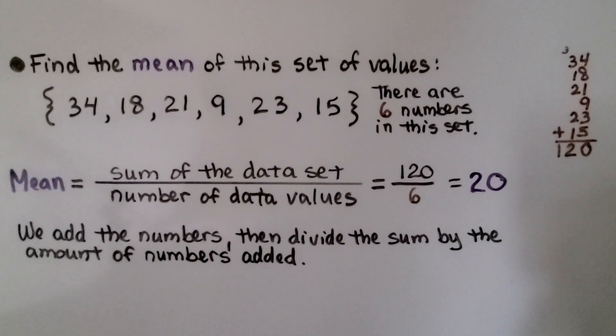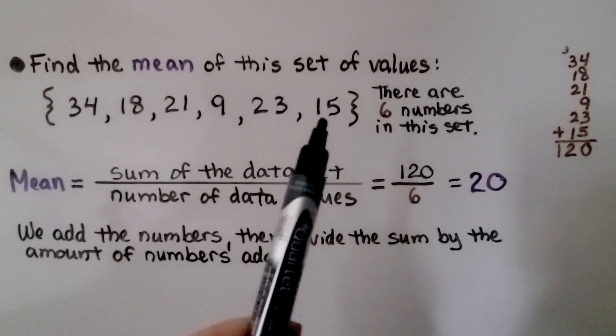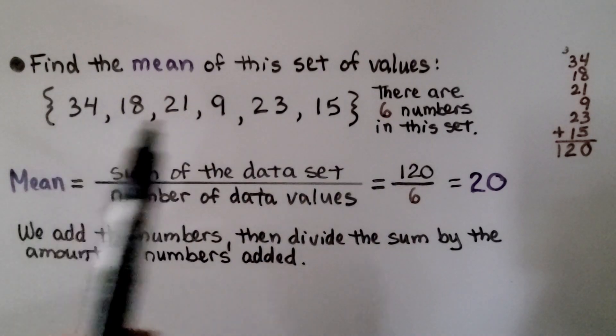Now we're finding the mean of this set of values. We have one, two, three, four, five, six numbers. There's six numbers in this set. We total them as addends and we get 120.